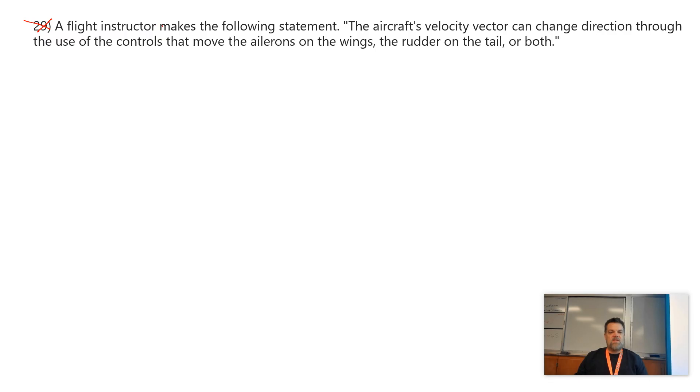So it says a flight instructor, this is like 27 I think now, a flight instructor makes the following statement, an aircraft's velocity vector can change direction through the use of controls that moves, I don't know what that word is. On the wings, I think those are the little things, or both.